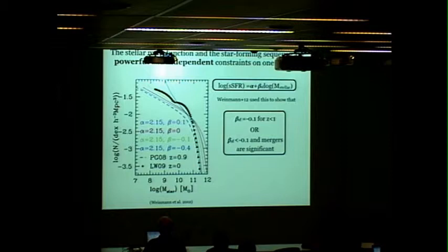The stellar mass function and star forming sequence can be used to put powerful constraints on one another because to first order they're a derivative integral pair. The stellar mass function grows primarily through star formation. This is a plot from Simona Weinemann's paper in 2012 where she built a simple toy model. She took the stellar mass function at redshift 0.9 and grew it with star formation alone.